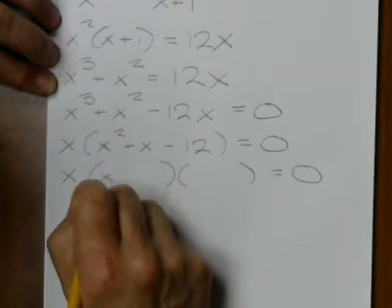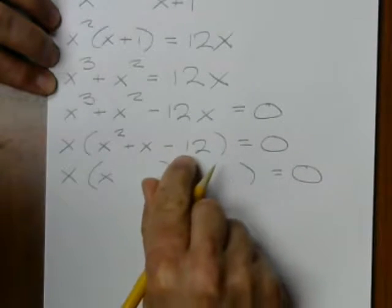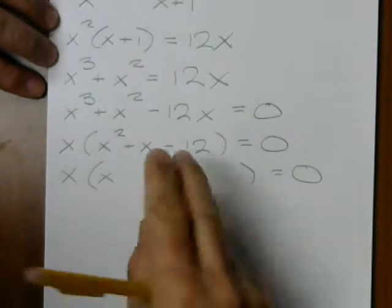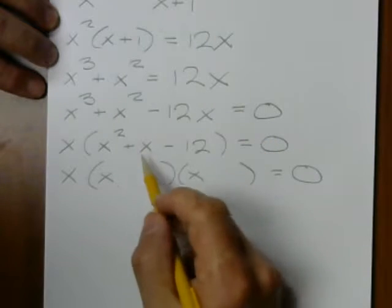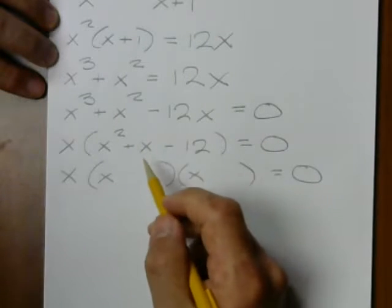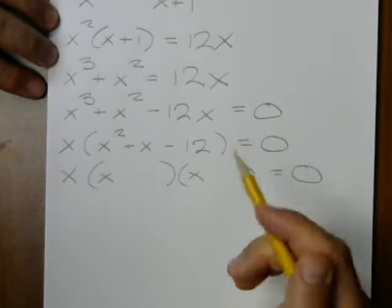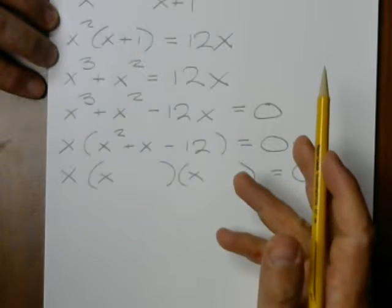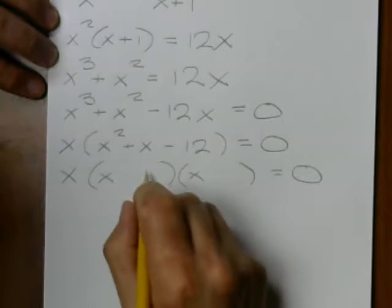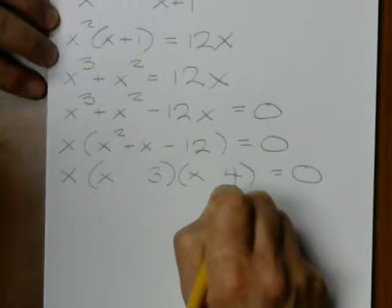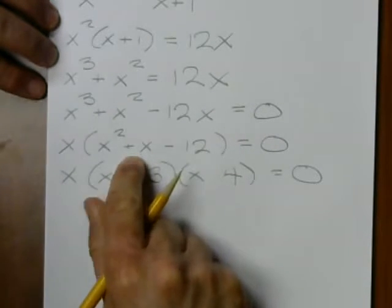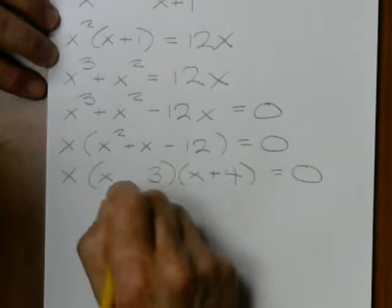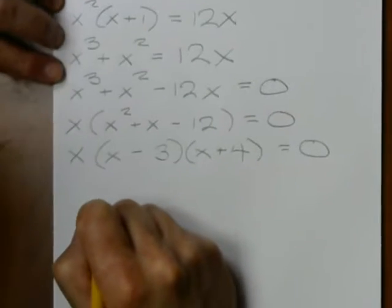Let's see if we're looking for solutions in the whole numbers. Well, 12 could be 1 and 12, but I'm not going to get a 1 by taking plus or minus 1 or plus or minus 12. I'm also not going to get any odd number if I take plus or minus 6 and 2. But if I take 3 and 4, and I want to get a plus x, I'd have to add the 4x and subtract the 3x.